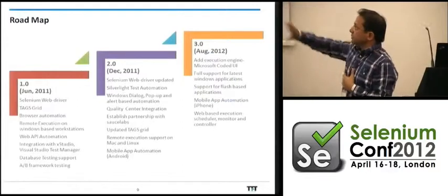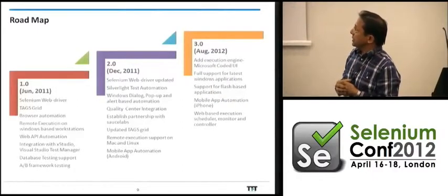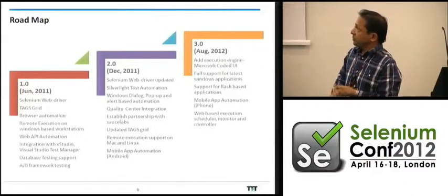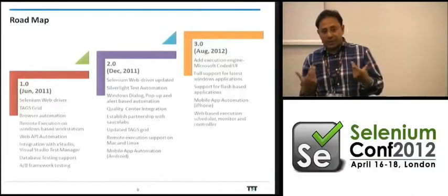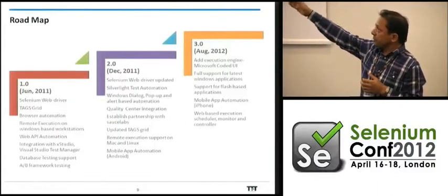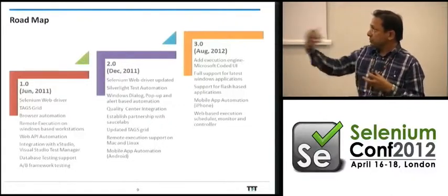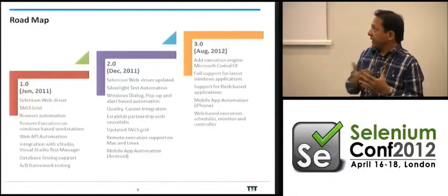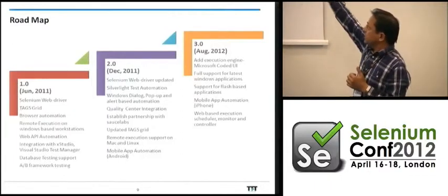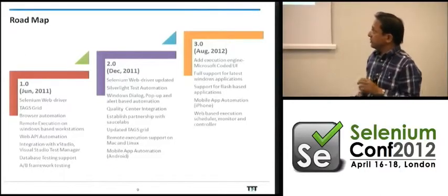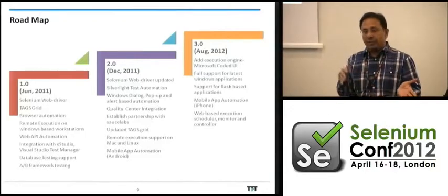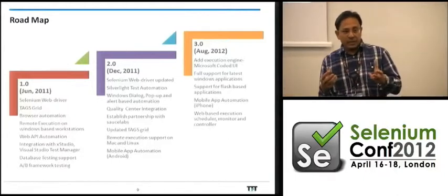We recently released version 2.0 in January. We support Selenium WebDriver and use our own grid — the TAG Grid — rather than Selenium Grid, to drive distributed execution on various machines. We also support browser automation, remote execution, API automation, and integration with various test management tools. We are doing mobile app automation for SDK-based apps on Android, and we've also looked at iPhone, though there are build-related challenges there.